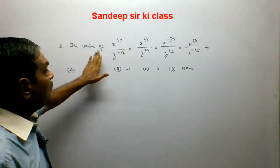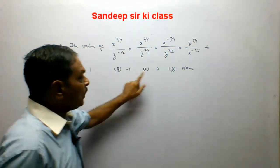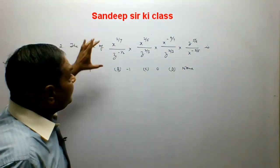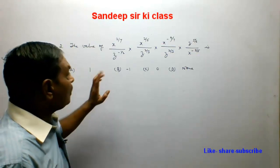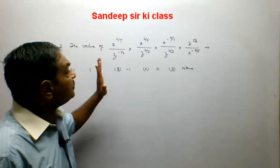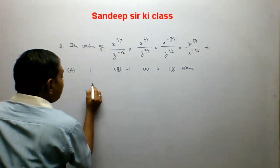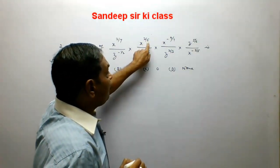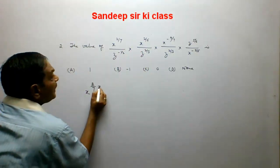Question number 2 is: the value of this expression. Options are 1, minus 1, 0, and D is none. We see that in the expression we have either base X or base Z. We will first look at terms with base X. Here the power is 2 by 7, and in multiplication the power is 2 by 5. So in multiplication powers will be added: plus 2 by 5.